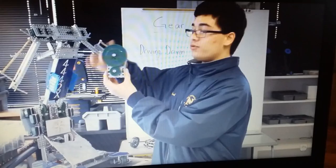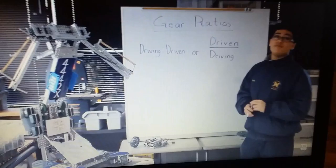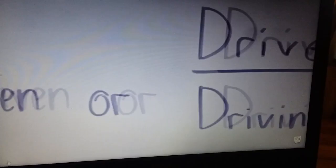The higher the gear ratio, the faster the output speed will be, and the lower the gear ratio, the slower the output speed will be. A gear ratio can be given in two different ways: you can use a colon and write driving to driven, or you can put it as a fraction with driven over driving.